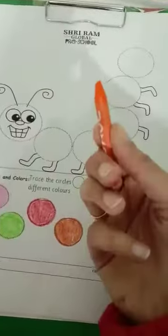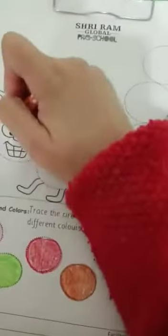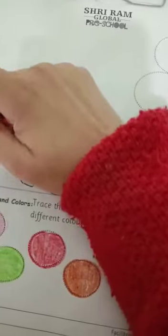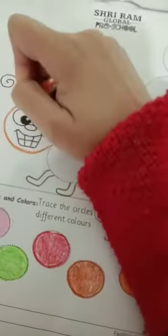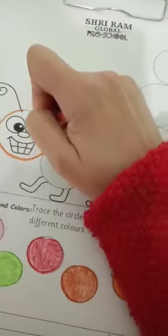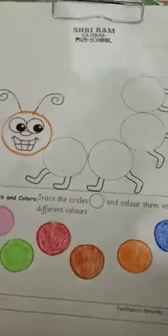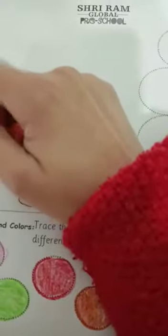So I'm going to take first orange color. So trace the face first. Trace, trace, trace. Round, round, circle like this. Yes! We are going to color it nicely.